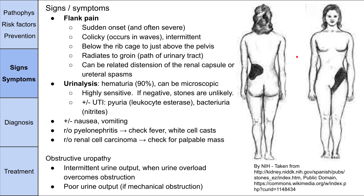Now let's talk about the signs and symptoms of kidney stones. Kidney stones primarily present with flank pain. The pain is usually sudden onset and pretty severe — people describe it as going from 0 to 100 very quickly. The pain can be colicky, occurring in waves intermittently. The location is below the rib cage to just above the pelvis, and some patients describe it as radiating toward the groin, which follows the path of the urinary tract.